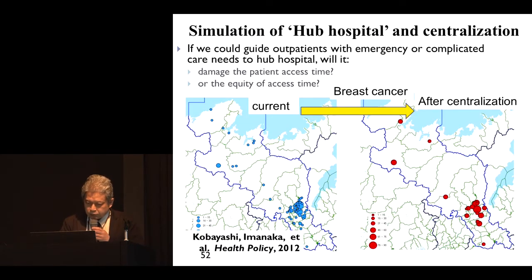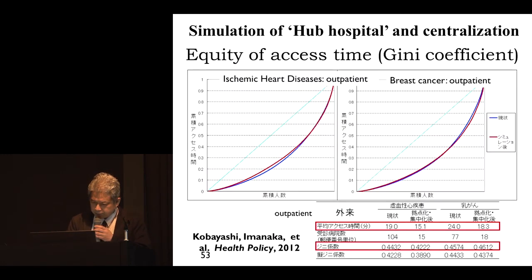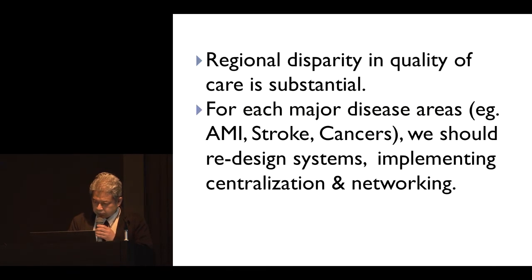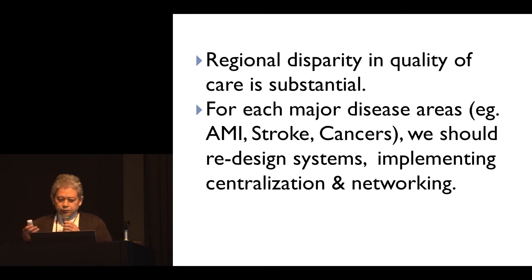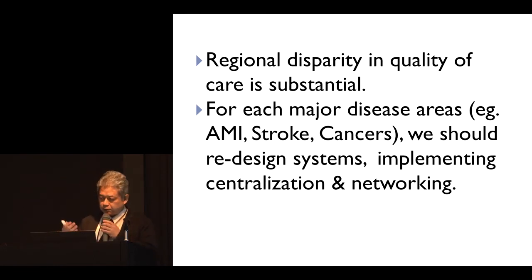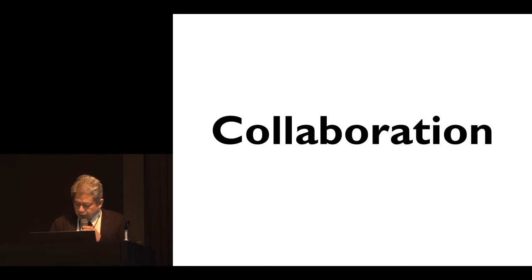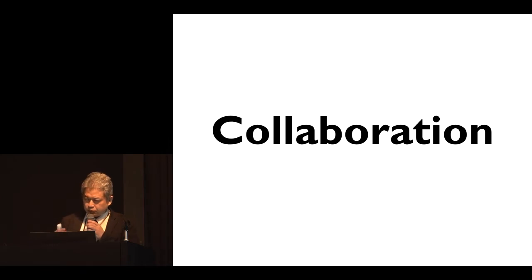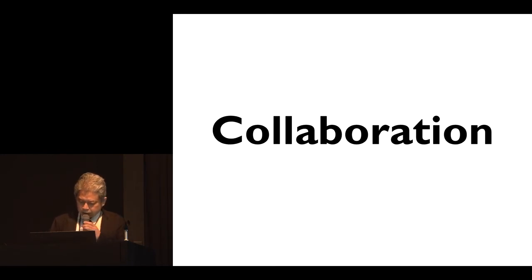We also did simulation of the effect of creating a hub in the network. The regional disparity in quality of care is substantial. For each major disease area — MI, stroke, or cancer — we should redesign systems based on data and implement centralization and networking. But with data alone, nothing happens. We need to transform the system, and for that task, we need intersectoral collaboration.